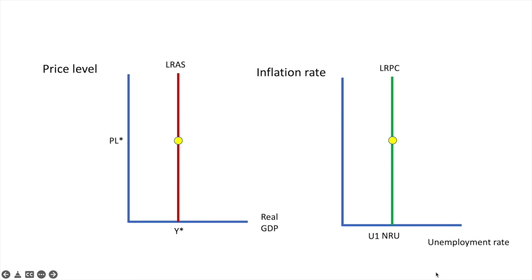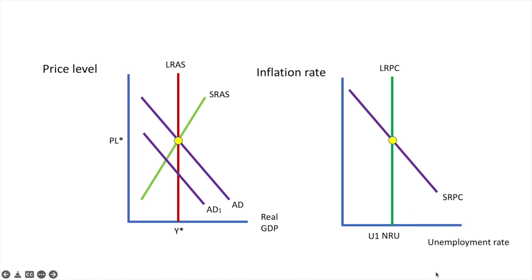If you shifted the aggregate demand curve leftwards to AD1, you made the first correct move. On the diagram on the right, we just move along the short-run Phillips Curve to a point reflecting the corresponding fall in the inflation rate and rise in the unemployment rate. But we're not done yet — if aggregate demand falls and the price level decreases, demonstrate the impact of the change in expectations of workers on both diagrams.